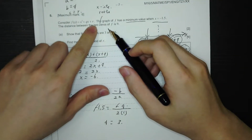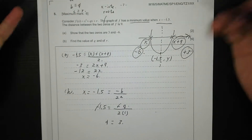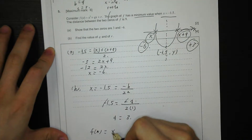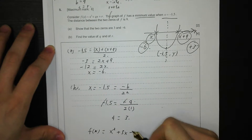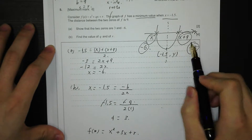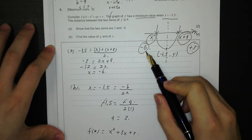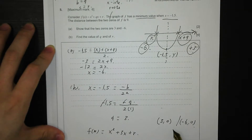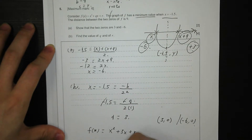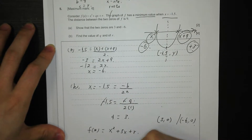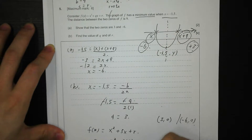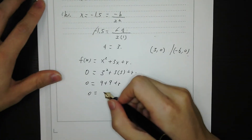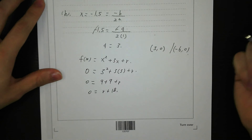Now r is the y-intercept, but we don't know it directly. We can rewrite the function as f of x equals x squared plus 3x plus r. We know the two x-intercepts: (3, 0) and (negative 6, 0). Substituting x equals 3 and y equals 0: 0 equals 9 plus 9 plus r, so 0 equals r plus 18, giving r equals negative 18.